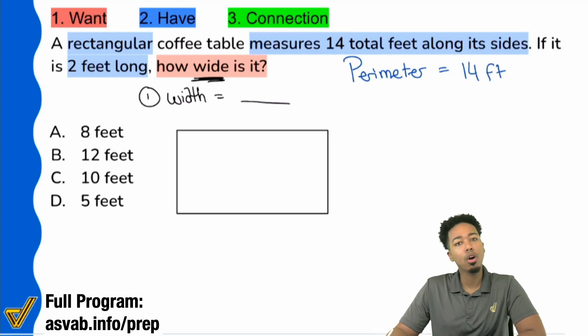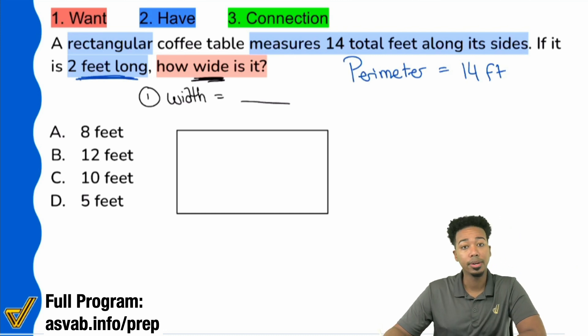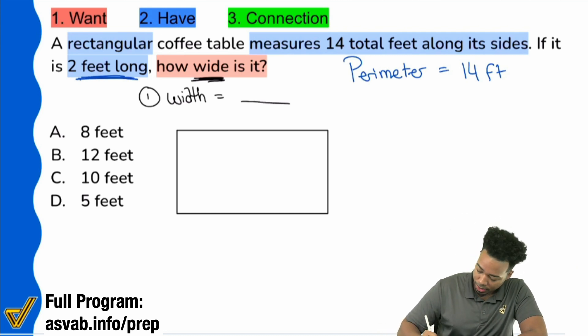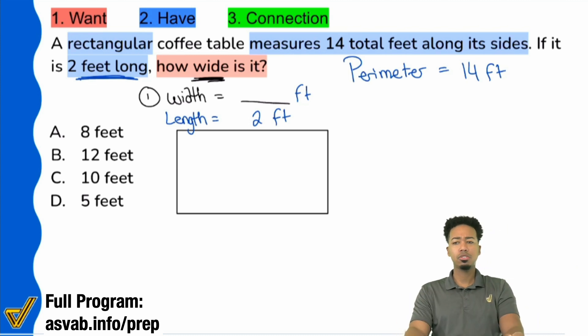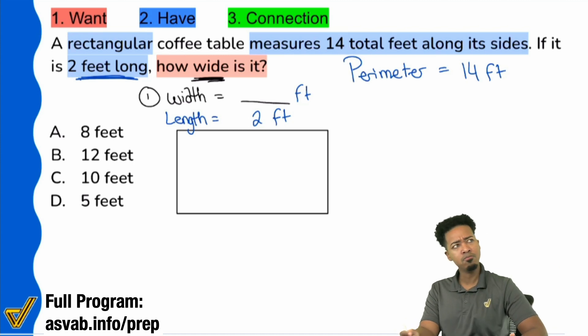So we'll go ahead and make sure we note that the perimeter equals 14 feet. And then we are also told that it's two feet long. So the width is we don't know, and the length is two feet. Let's think about all of the information that we have given to us. We're looking for the width, we have the length, and we're also given the perimeter. Is there possibly a formula that might help us out? The perimeter formula.